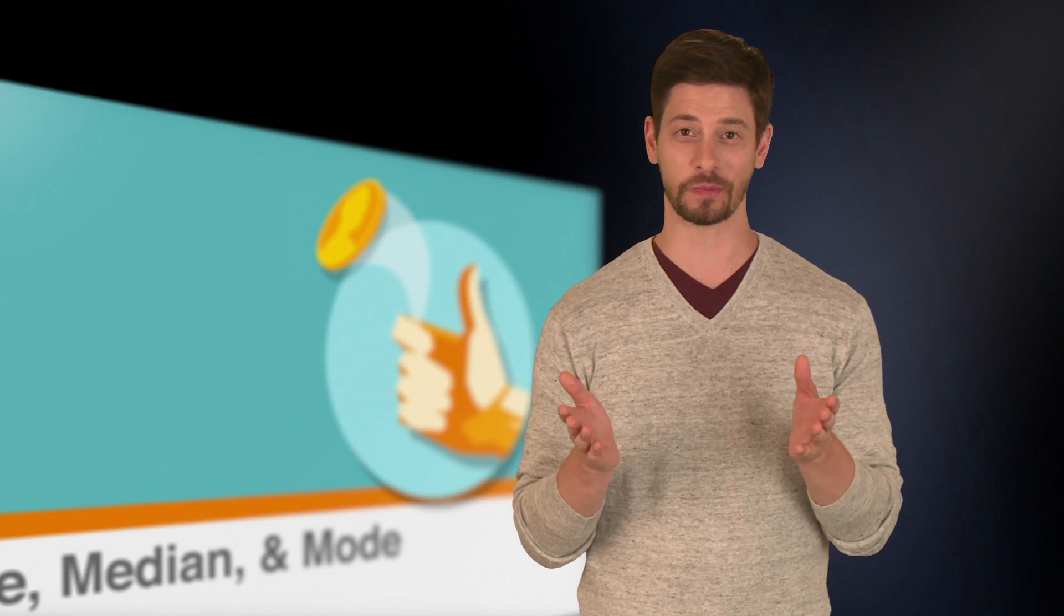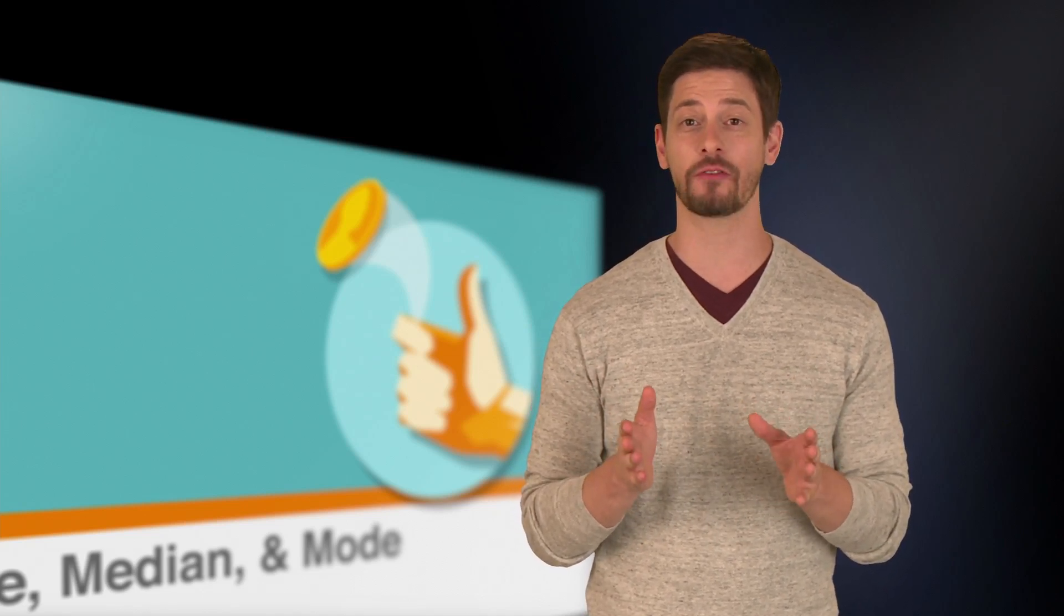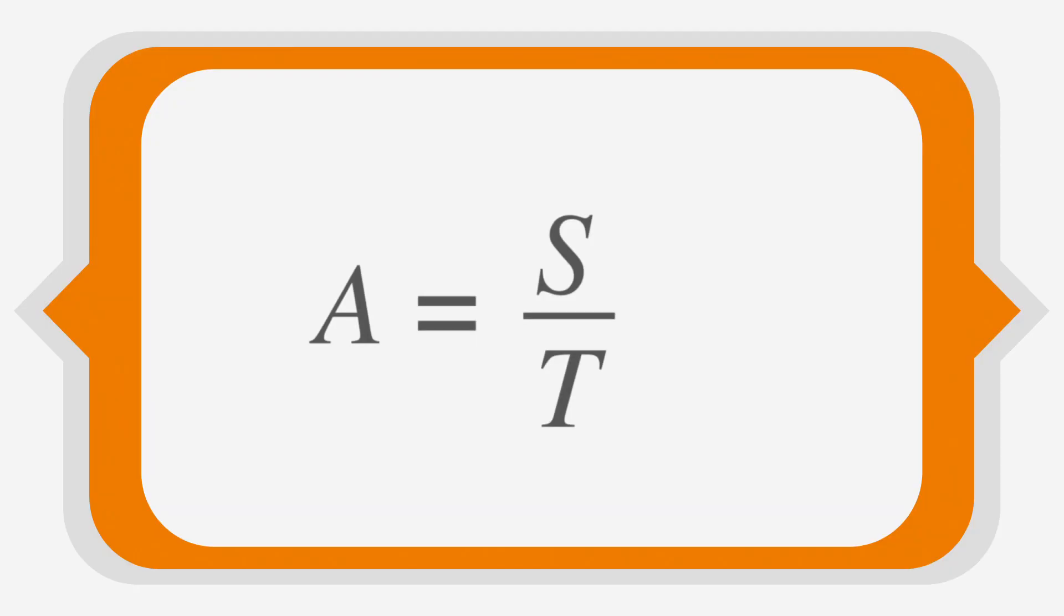Luckily, there's a rule we can apply. When you have an even amount of numbers, the median will be the average of the two middle numbers. So we'll take the average by dividing S over T. 3 plus 5 over 2 is simplified to A equals 8 over 2, which is 4. So the median here is 4.